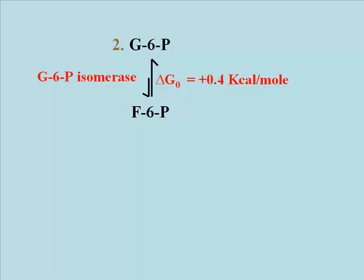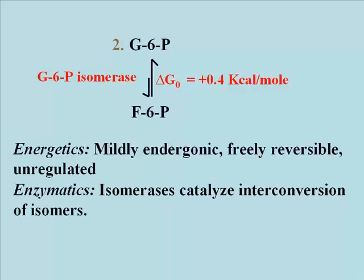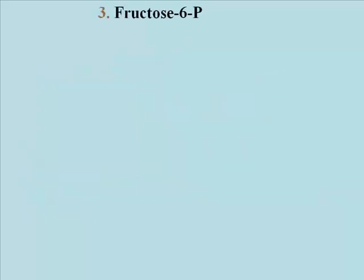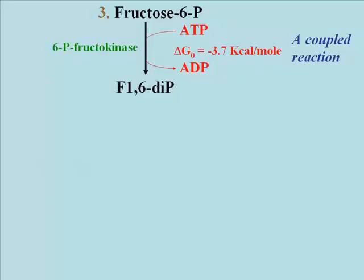This reaction, as you can see, is endergonic, but very modestly so. The catalyzed reaction is freely reversible. Enzymes that catalyze the interconversion of isomers are often called isomerases. In the next reaction, fructose 6-phosphate will itself be phosphorylated. This exergonic reaction is catalyzed by the enzyme phosphofructokinase, which couples the phosphorylation of fructose 6-phosphate to ATP hydrolysis.